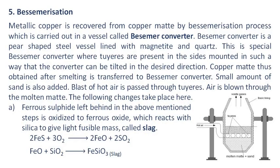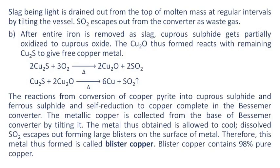Bessemerization: Metallic copper is recovered from copper matte by Bessemerization, carried out in a vessel called the Bessemer converter. The Bessemer converter is a pear-shaped steel vessel lined with magnetite and quartz, with tuyeres in the sides, mounted so the converter can be tilted in the desired direction. Copper matte from smelting is transferred to the Bessemer converter and a small amount of sand is added. A blast of hot air is passed through the tuyeres. Ferrous sulfide is oxidized to ferrous oxide, which reacts with silica to give a light fusible mass called slag. Slag being light is drained out from the top at regular intervals by tilting the vessel.